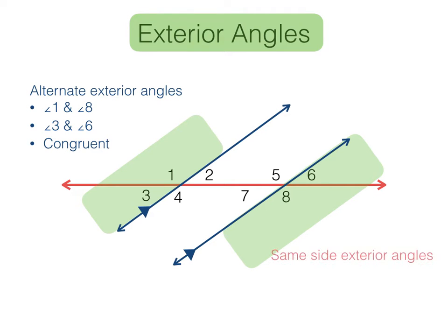Same-side exterior angles lie on the same side of the transversal and are located outside the parallel lines. Angles 1 and 6 are same-side exterior angles, as are angles 3 and 8. Same-side exterior angles are supplementary — their measures add up to 180 degrees.